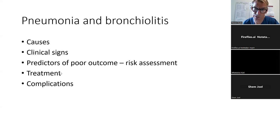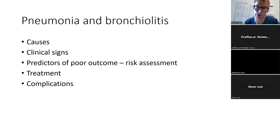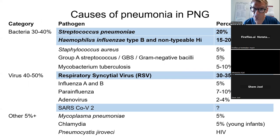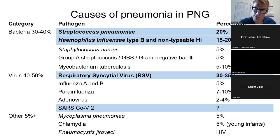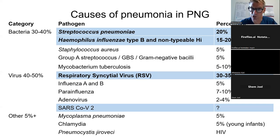We'll talk about treatment of pneumonia and also about complications, because the sickest children with pneumonia often don't have a simple pneumonia — they have a quite complicated form. I'll explain the different types of complicated pneumonia as we go along. In terms of etiology, there have been many studies looking at the causes of pneumonia in Papua New Guinea and many other countries over the last 40 years, and this is the current breakdown.